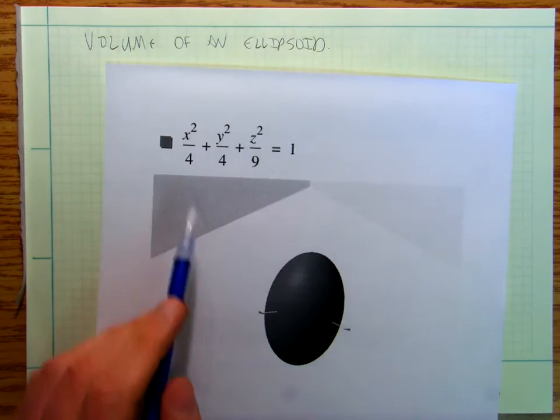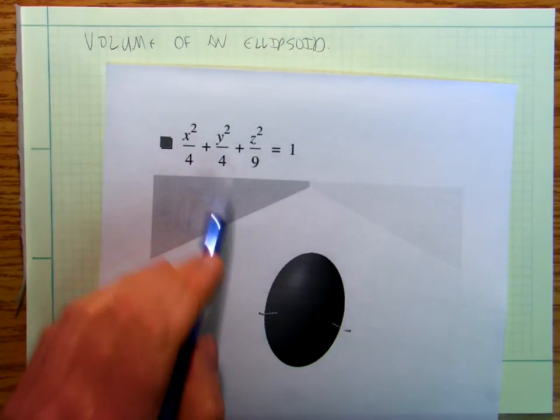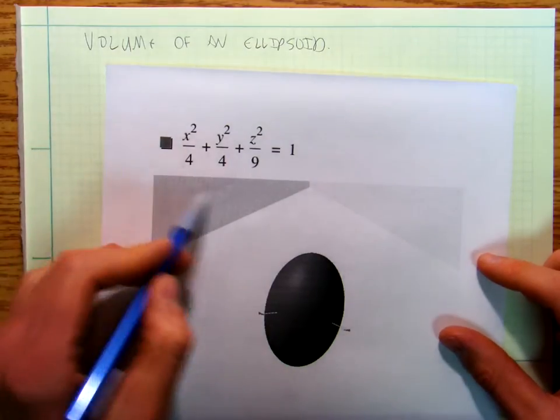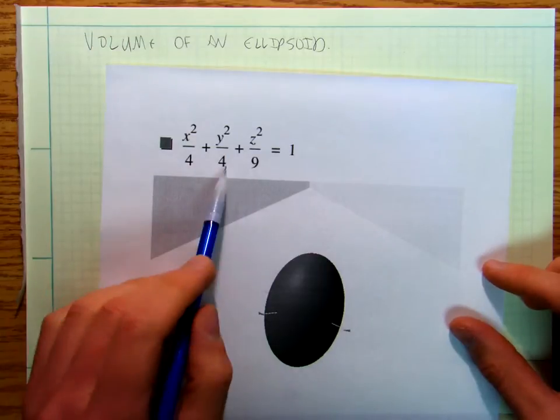So what I want to do is I've made a simplification, which is basically it's a circle in one direction. So I didn't make all these numbers different.